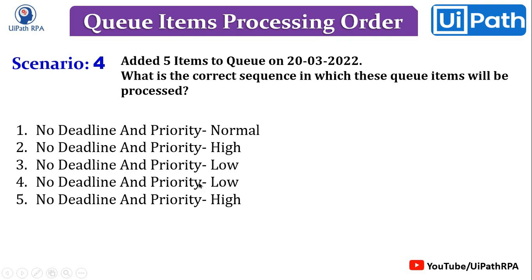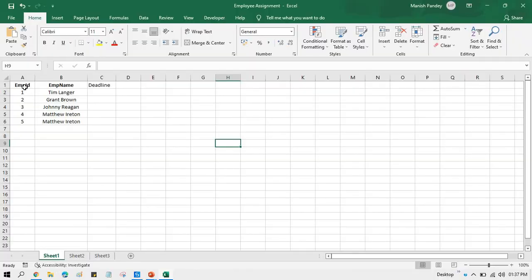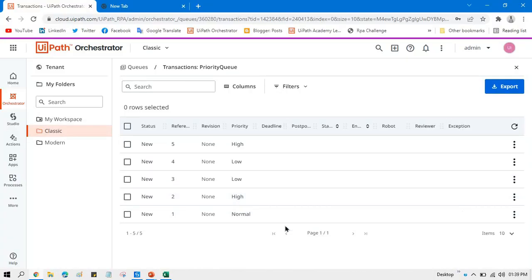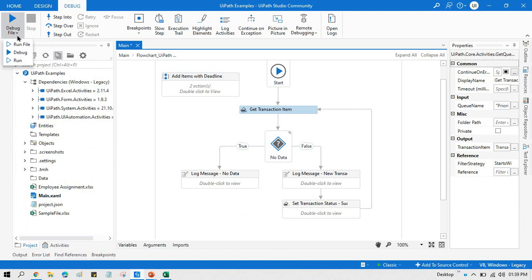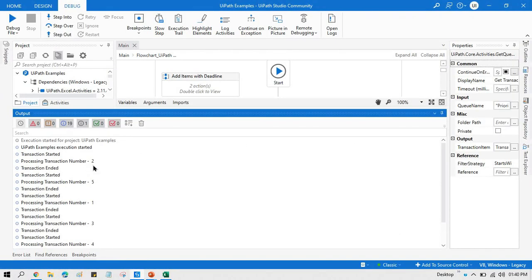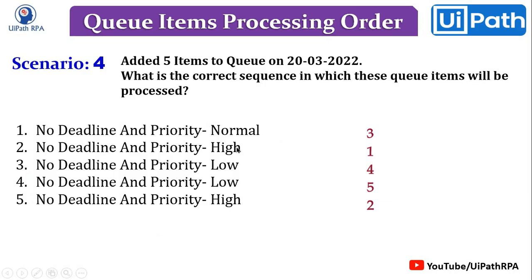In scenario four, we have five items with no deadline but different priorities — normal, high, low, low, and high. Items are processed by priority: high first, then normal, then low. For two items with the same low priority, FIFO applies. The processing order is: second, fifth, first, third, and then fourth — second and fifth have high priority, first has normal, then third and fourth have low priority processed in FIFO order.